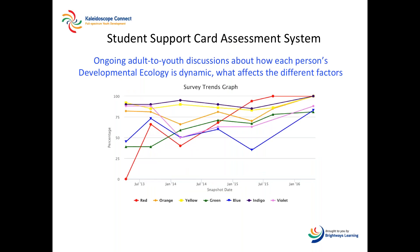The Student Support Card benchmarks a student's web of support where we can correlate their score to the likelihood of them thriving, as well as their likelihood to avoid risky behaviors. This correlation is wonderfully instructive. Rather than focusing on labeling a student, the assessment gives each student an insight into knowing who they are and how to amplify what is right and strong within themselves. This motivates them to the co-creation of their web of support.